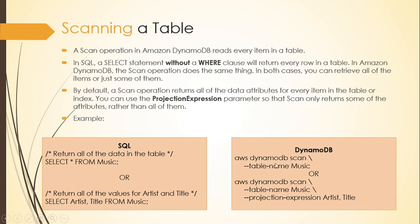Those two statements are equivalent and will return all data from your table. If you want to retrieve only some attributes, in SQL you would do: SELECT Artist, Title FROM Music. Similarly in DynamoDB: aws dynamodb scan --table-name Music --projection-expression "Artist, Title". This statement will return all values for the Artist and Title attributes from the Music table. That is how you use projection expression with DynamoDB scan.